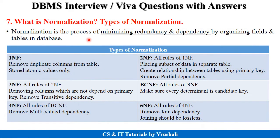The next important question is: what exactly is normalization and what are its types? Normalization is a process that minimizes redundancy, duplicate values, and dependency in your table in the database. There are total six types of normalization: first normal form, second normal form, third normal form, BCNF, fourth normal form, and fifth normal form. While giving interviews and viva questions, you must know the basic concept of each normal form.